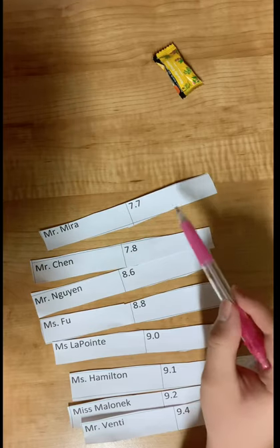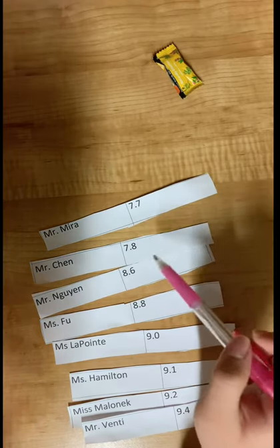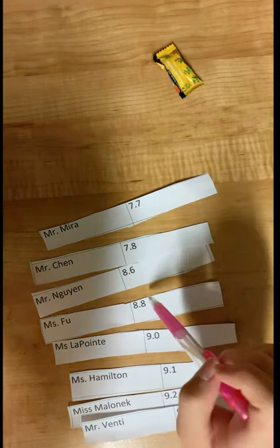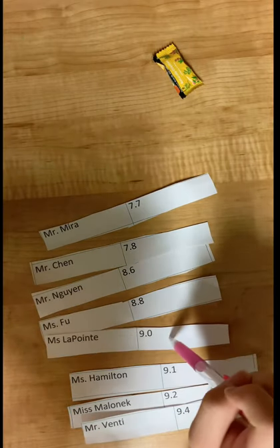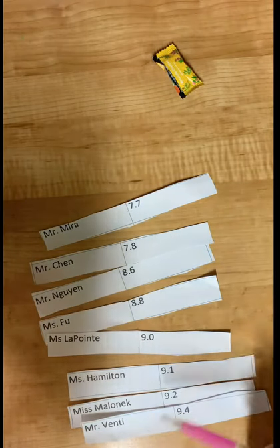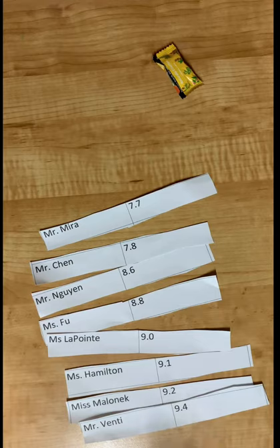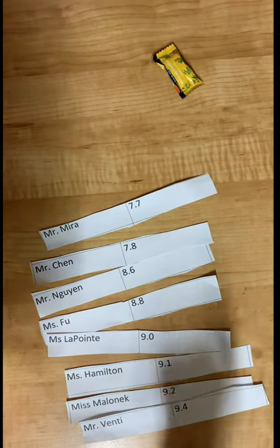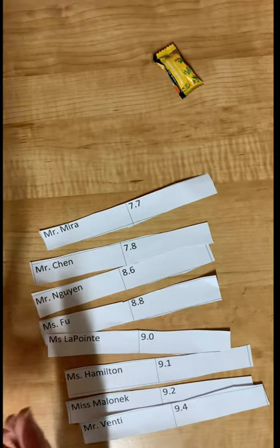We've got Mira 7.7, Chen 7.8, Nguyen 8.6, Fu 8.8, LaPointe 9.0, Hamilton 9.1, Malonic 9.2, and Venti 9.4, which seems in numerical order to me. Therefore, we've completely and successfully sorted our data using bubble sort. I hope you guys found this useful.